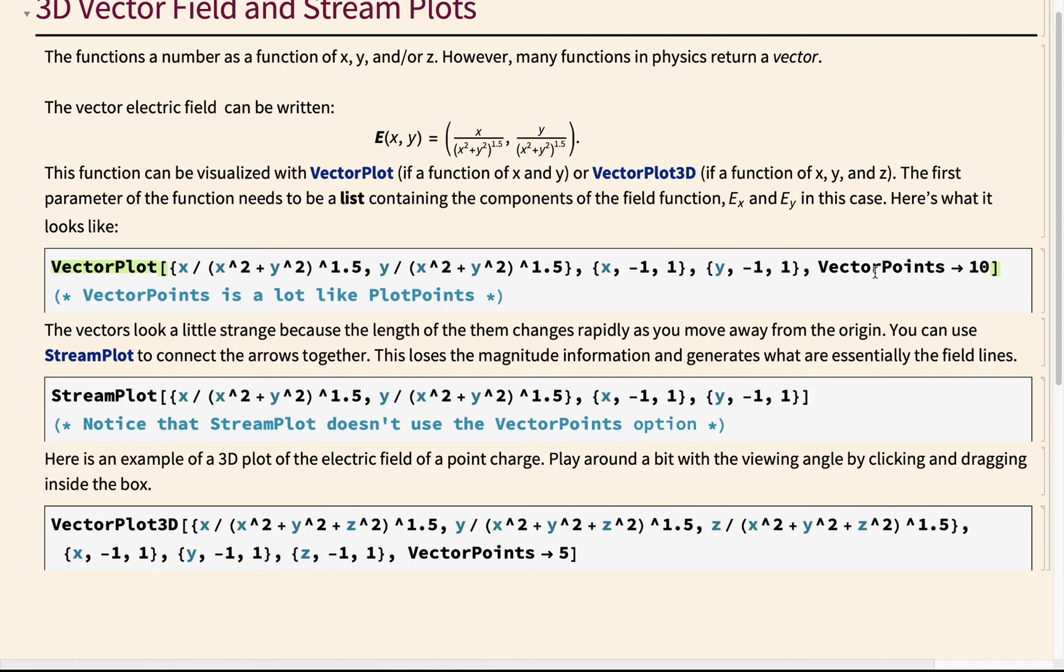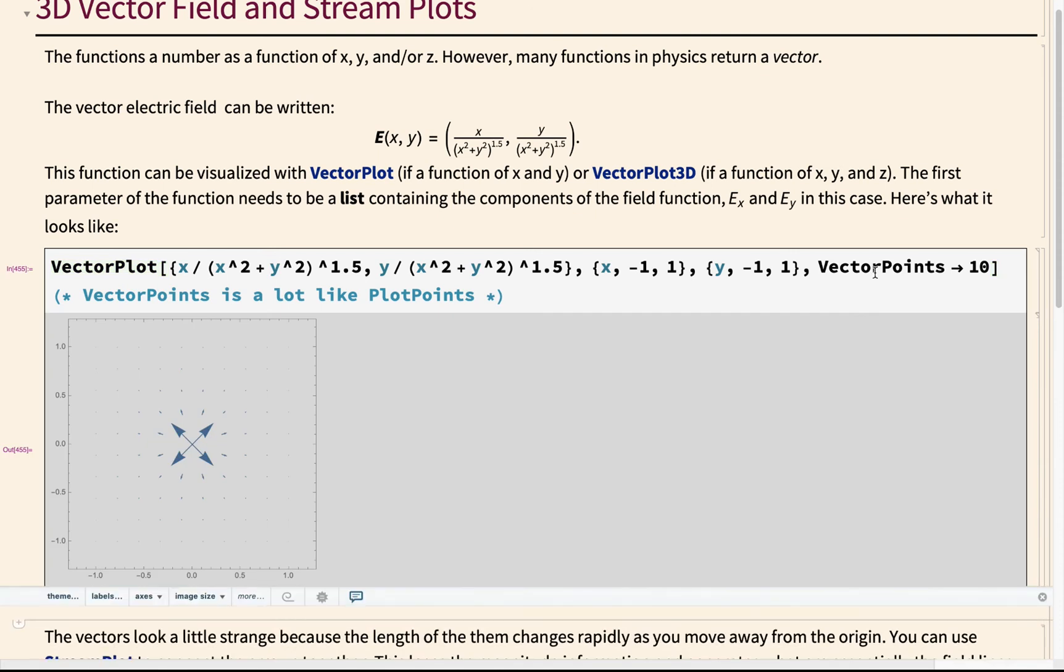I can show you what happens when I change that. But here, when I run it, I get arrows here that are giving me the length of the arrow, which is the magnitude of the electric field. And the direction of the arrow is giving me the direction of the electric field at 10 points within my range. And it's not 10 points total, but it's 10 points in each direction. So it's 10 points across here and 10 points across here. So that is equal to a hundred points total across my range.